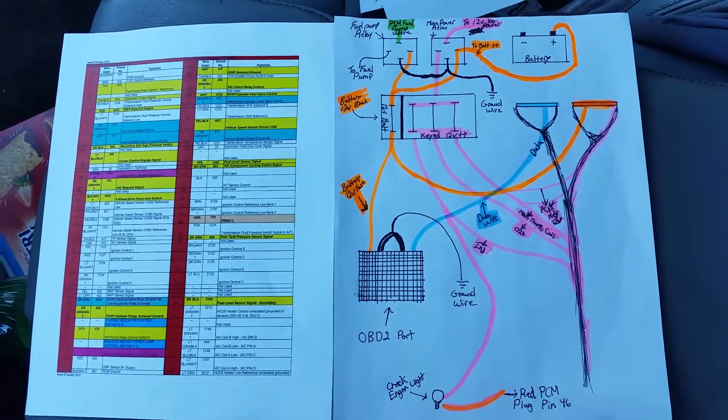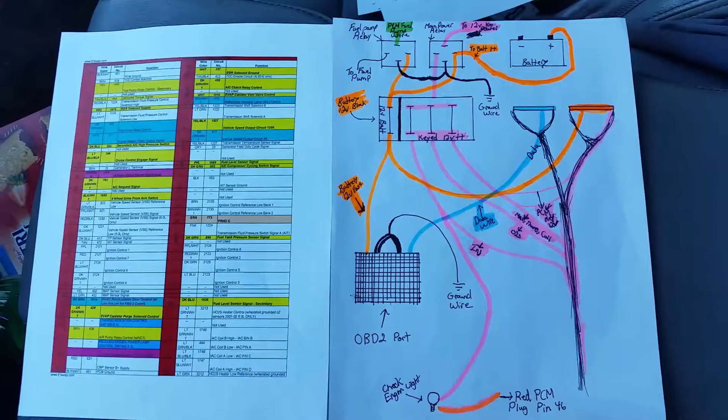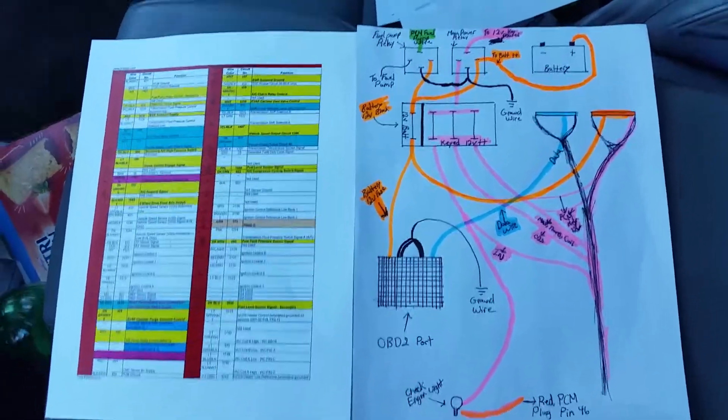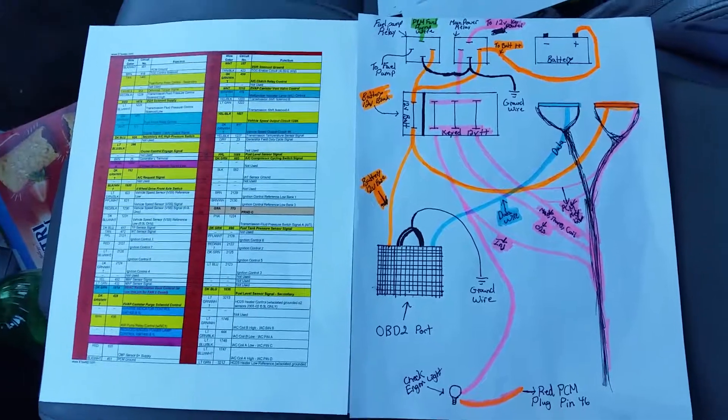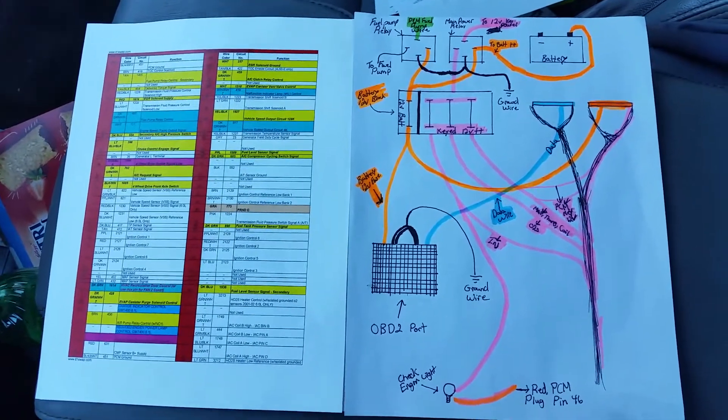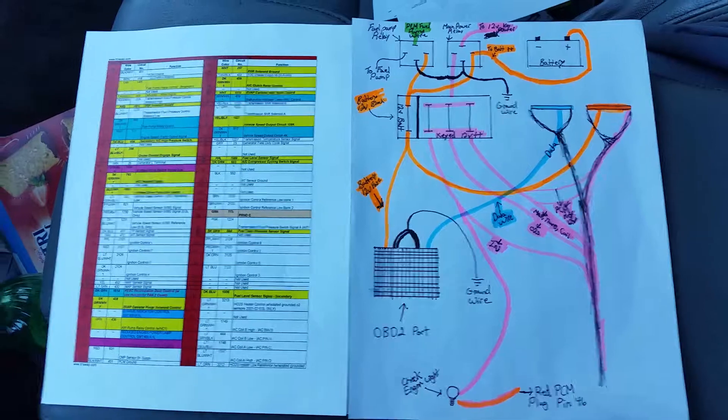Alright guys, here we go. This is a new video of me continuing on the LS swap on my 84 C10 Chevy pickup. This is a wiring diagram showing how you would make a three-wire or four-wire standalone harness.